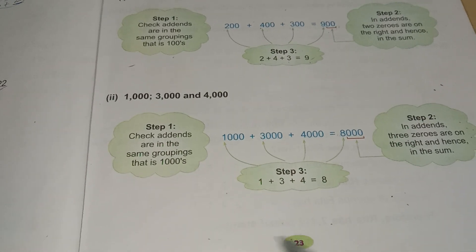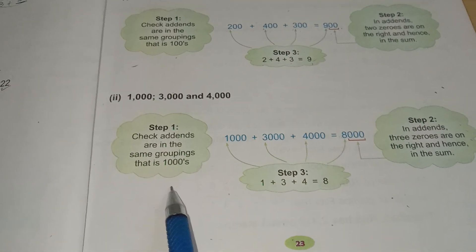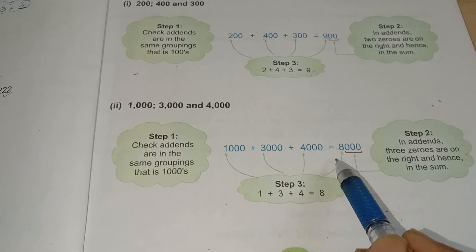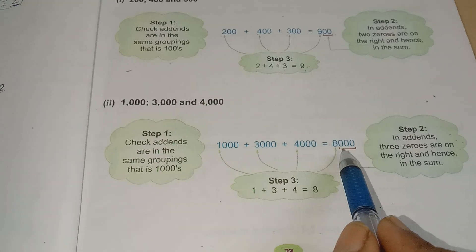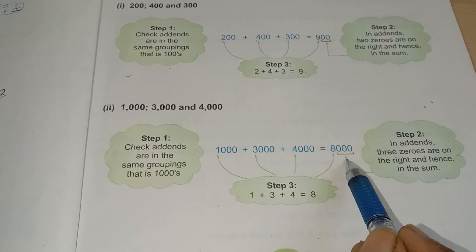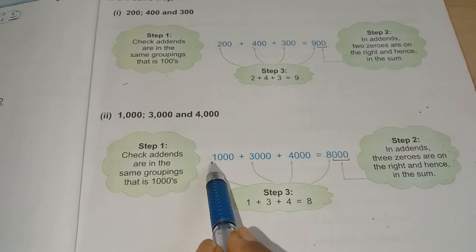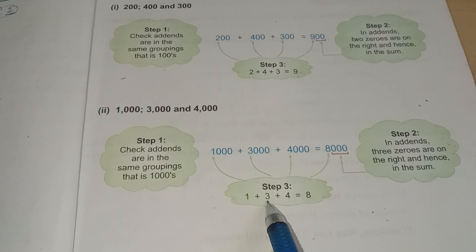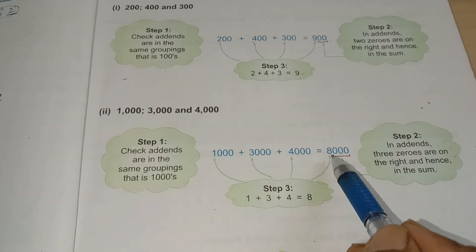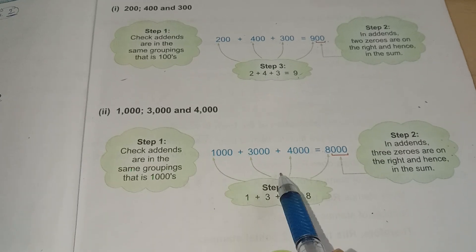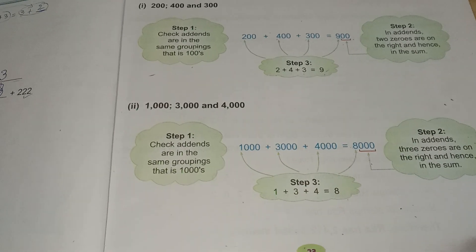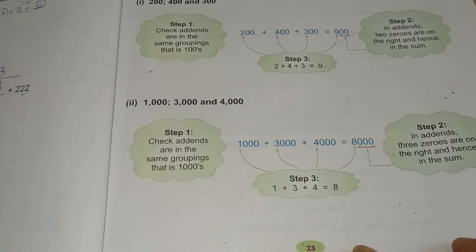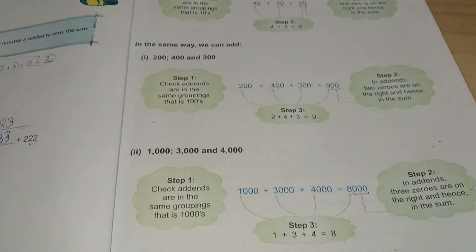Now it is grouped as thousands. In the addend, there are 3 zeros. So I will write 3 zeros in the right part. Now I will add the digits: 1 plus 3 plus 4 is 8. I write 8 here. That means 1,000 plus 3,000 plus 4,000 is 8,000. We can count these numbers orally very easily if we group them as tens, hundreds, and thousands.